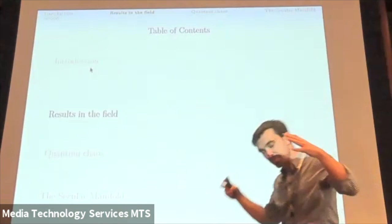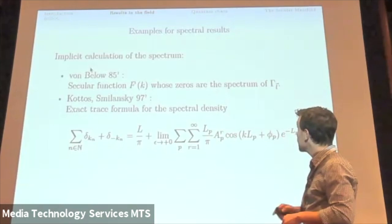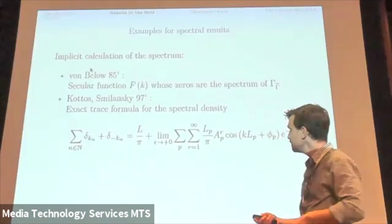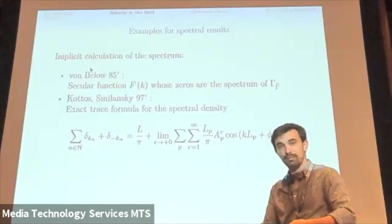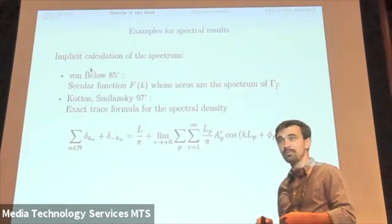Now, let me talk about a bit about results in the field. So let me first start with examples for spectral results, so we can implicitly calculate the spectrum. So Von Below showed in '85 that we can build a secular function, so-called, that's a function of k, for which its zeros are going to be the spectrum of the graph. So that's one way of calculating it.